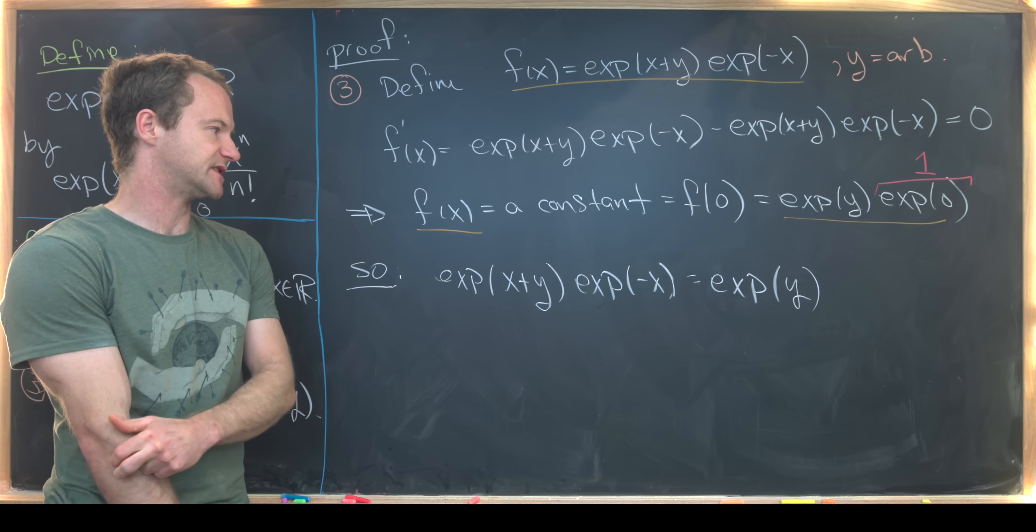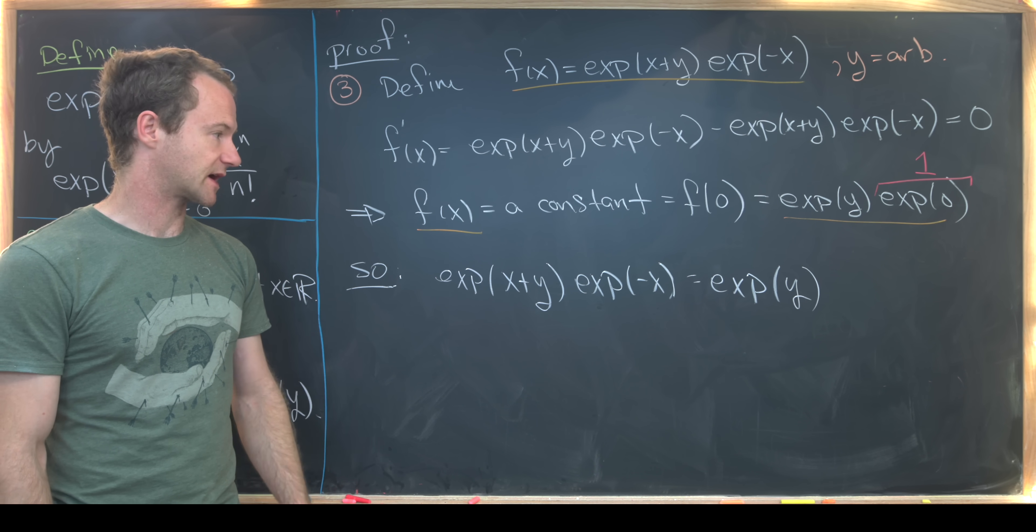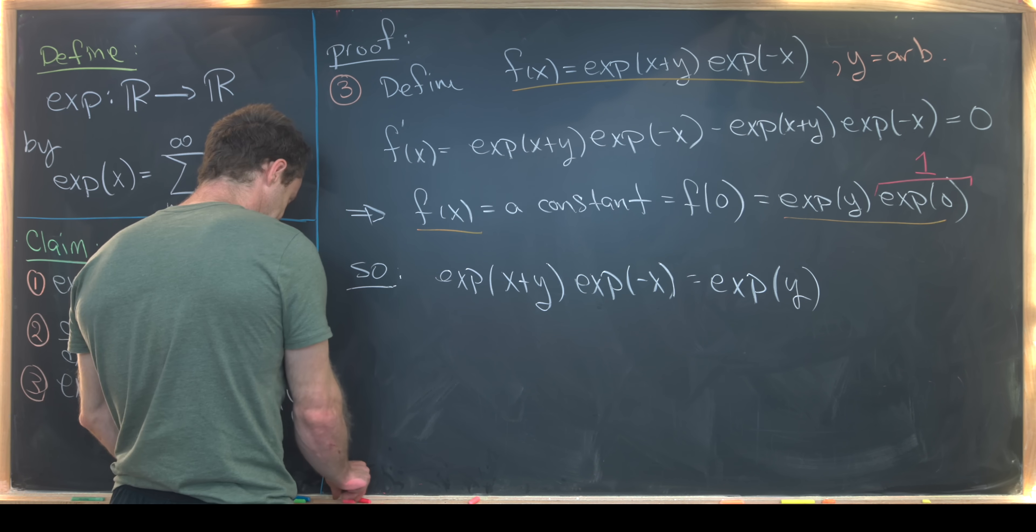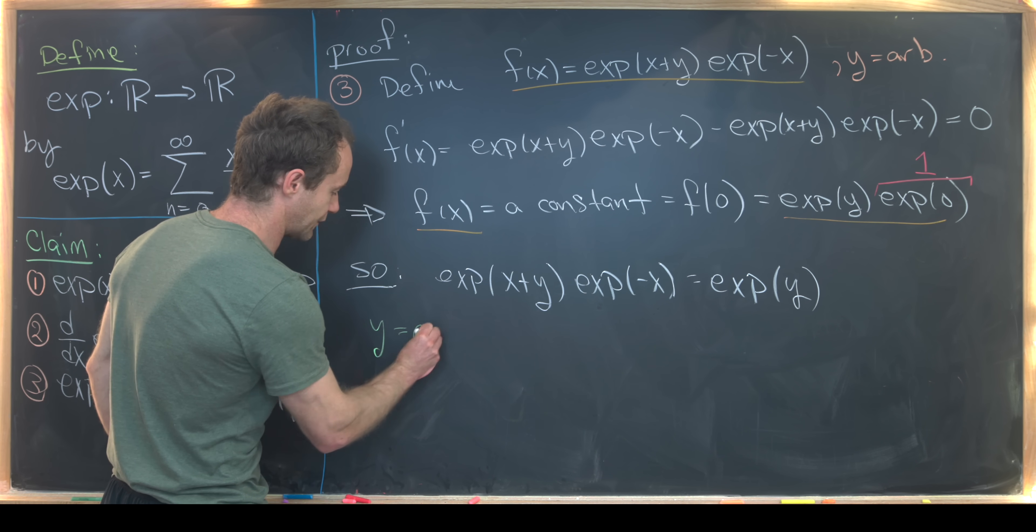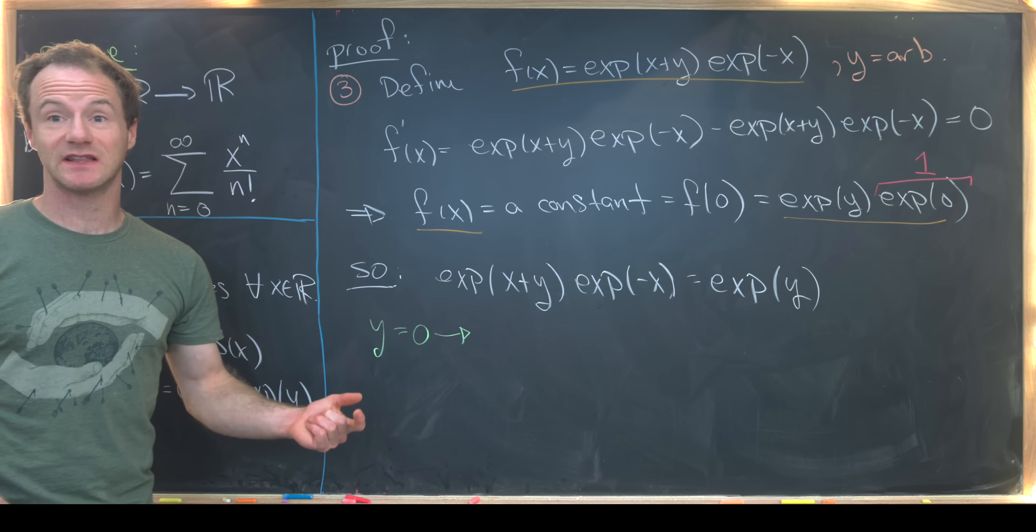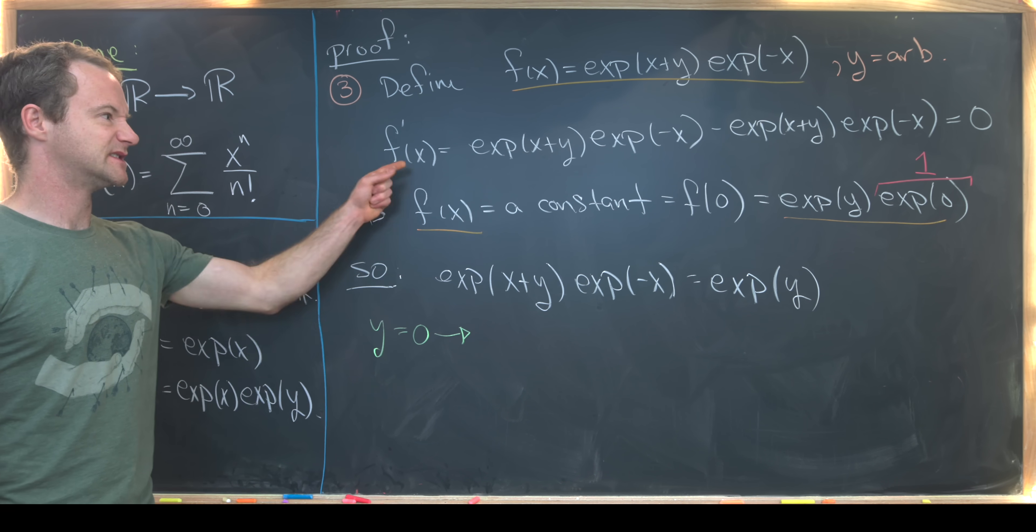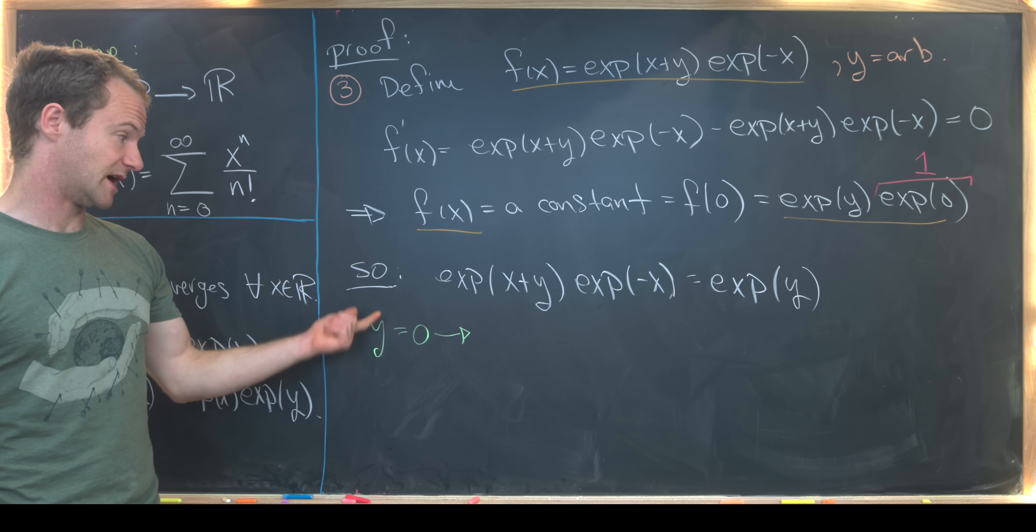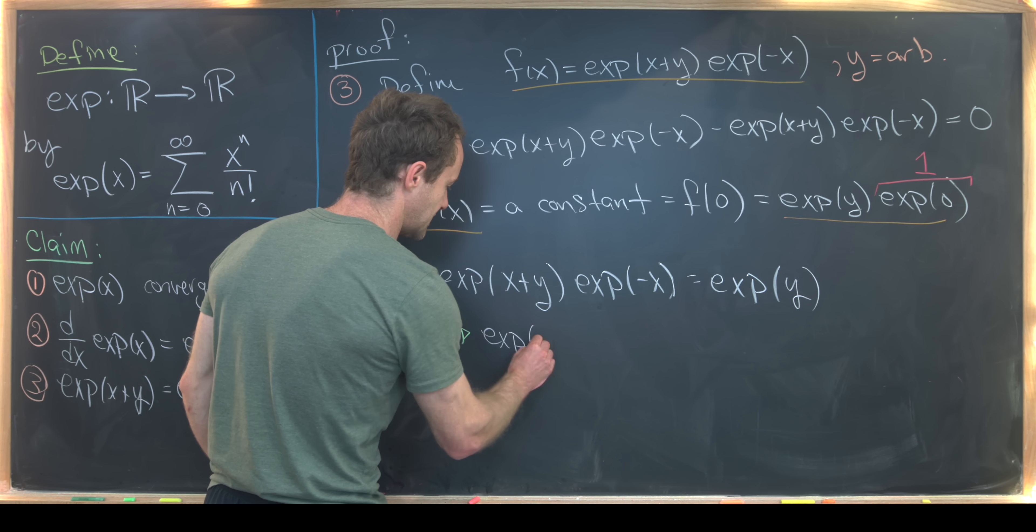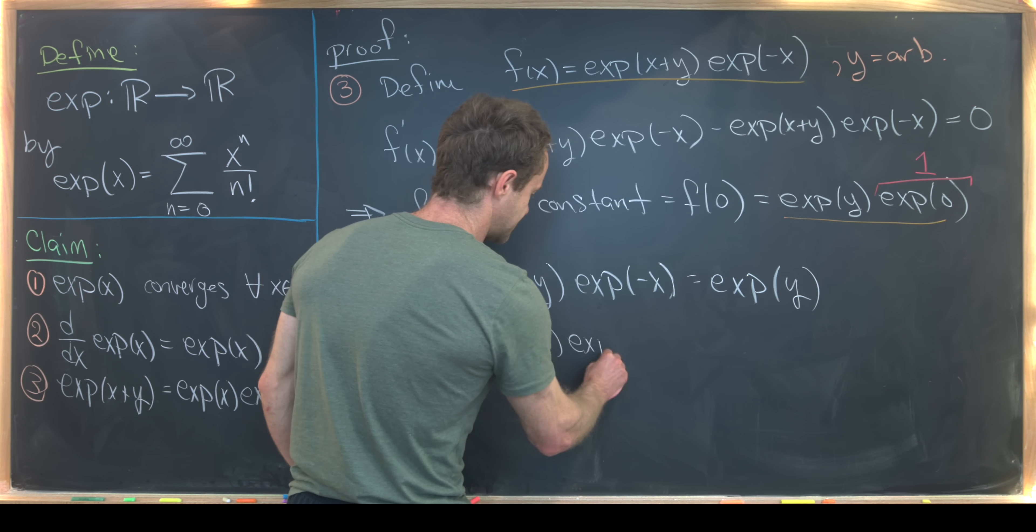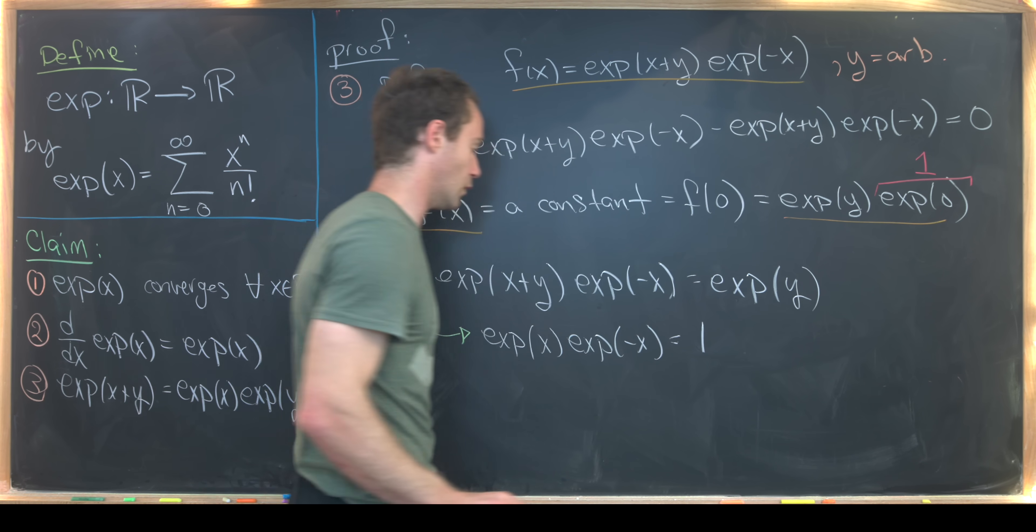But we can get that by setting y equal to zero and see what we get. So if we put y equals zero in this equation, which is allowed because y has been arbitrary and this is held for all fixed y. So it might as well hold for y equals zero. So that's going to give us exp(x) exp(-x) equals exp(0). But we already said that was one.